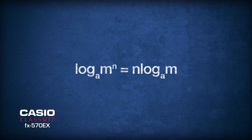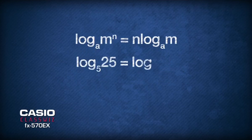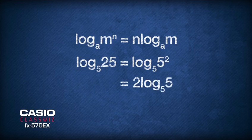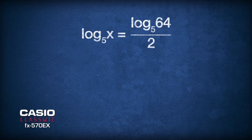Using this given formula from the formula list, logarithm base 5 of 25 can be written as logarithm base 5 of 5 squared and can be simplified to become 2. Now, we multiply 2 to both sides of the equation, getting 2 times logarithm base 5 of x equals logarithm base 5 of 64.